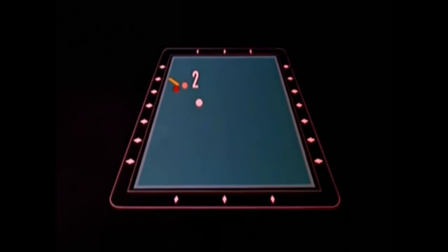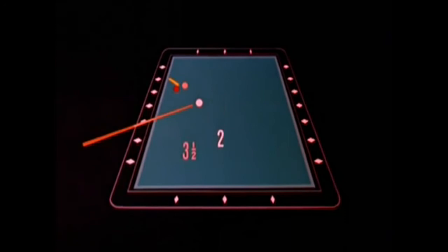Natural angle, two. Cue position: one and a half, two, two and a half, three, three and a half. Two from three and a half is one and a half. So, shoot halfway between the first and second diamonds.